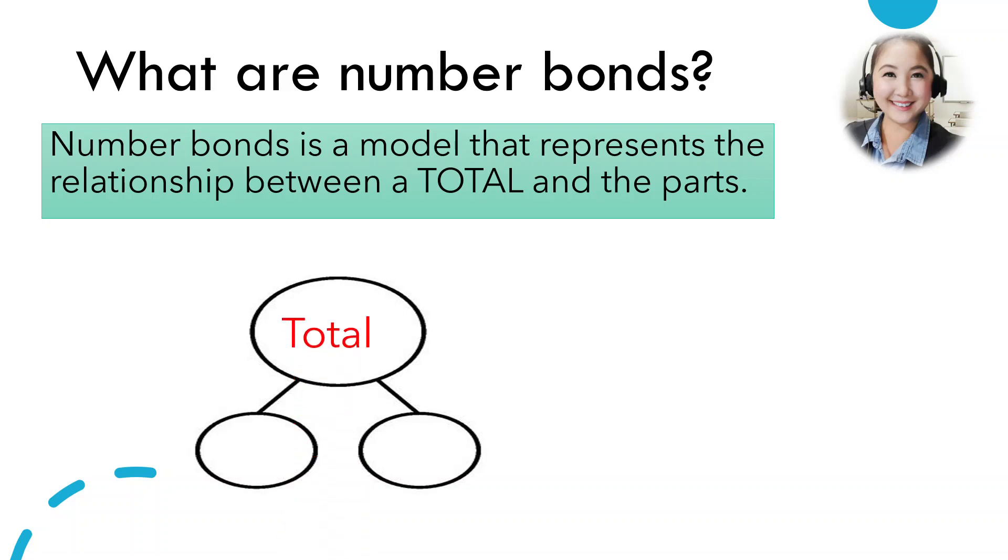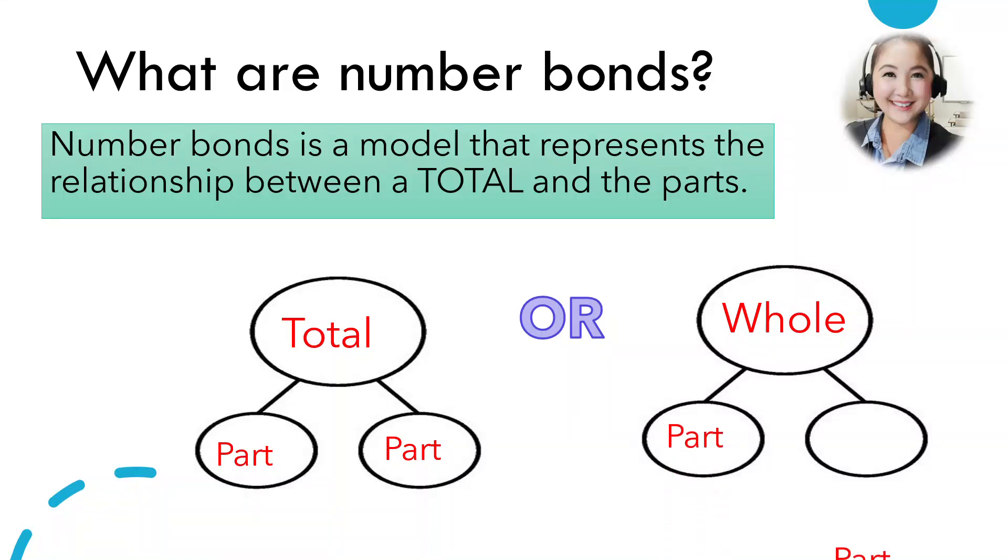So we can tell that the first circle, the bigger one, is the total, and the two parts. Or we can also rename the total as a whole and then part and part.